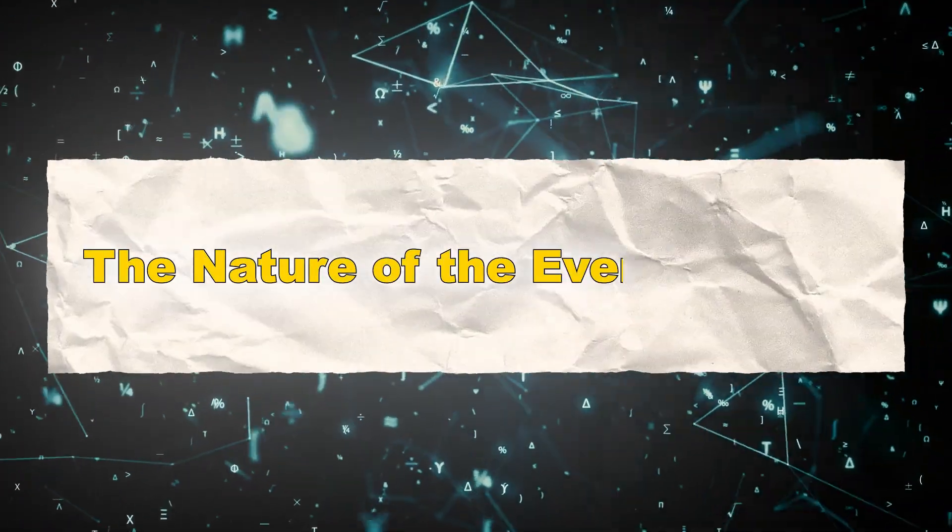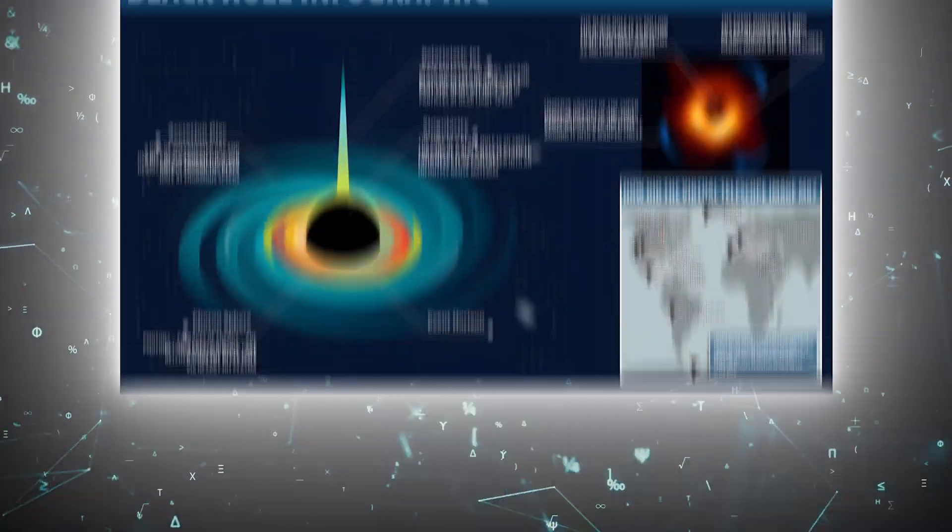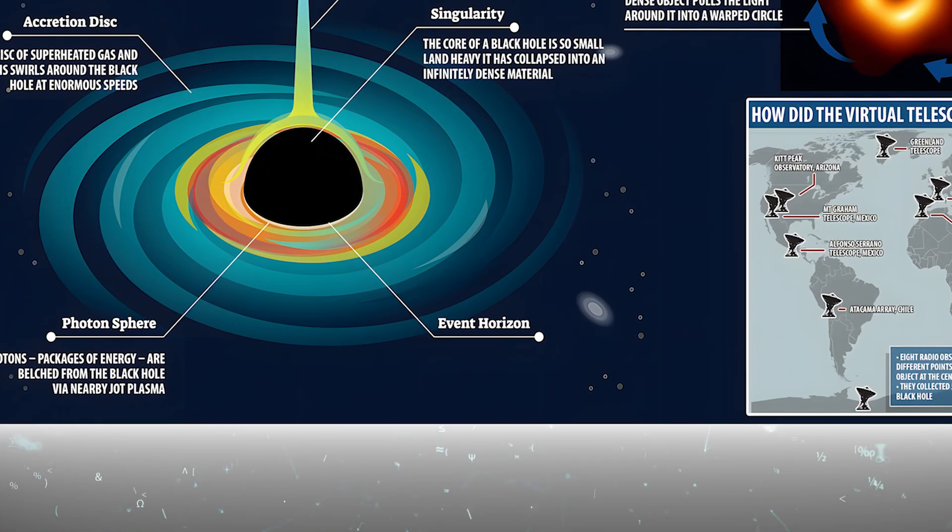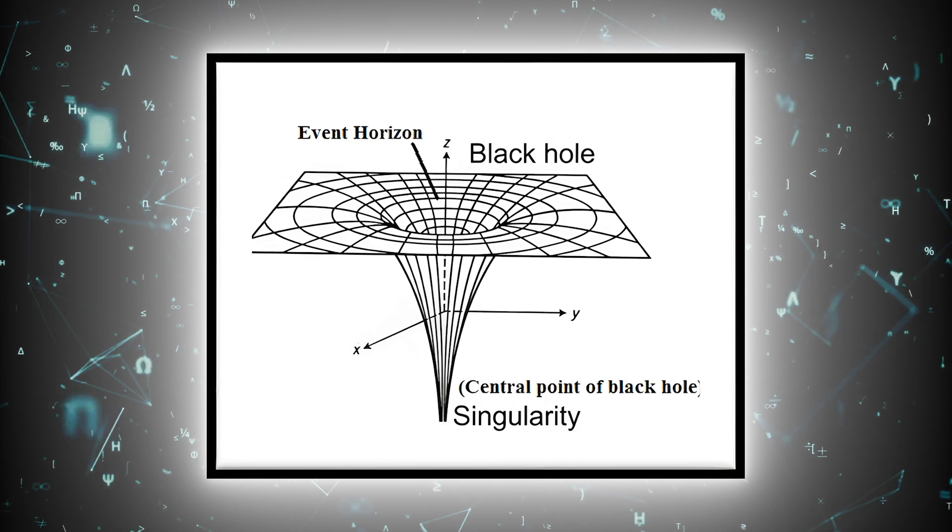The nature of the event horizon: The event horizon is not a physical surface, but a boundary that marks the point of no return. Once anything crosses this threshold, it is irrevocably drawn towards the black hole's singularity.